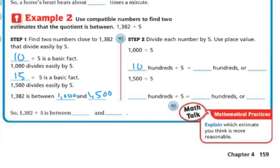Well, 10 hundreds divided by 5 is 2 hundreds or 200. And then 1,500 divided by 5. Well, that's 15 hundreds divided by 5. And 15 divided by 5 is 3 hundreds.